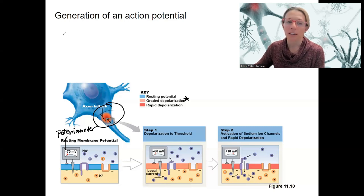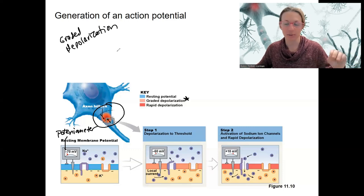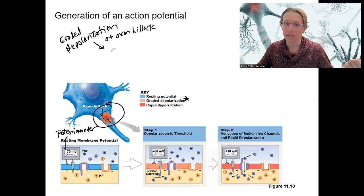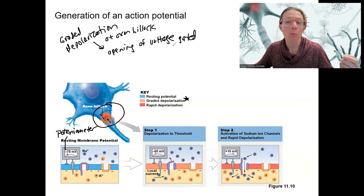Let's do a graded depolarization. That could be anywhere on the cell. So if we reach sufficient depolarization at the axon hillock, we are going to have the opening of voltage-gated sodium channels. Prior to this, we were opening chemically-gated, ligand-gated.